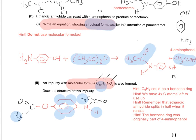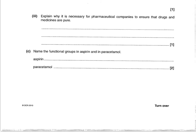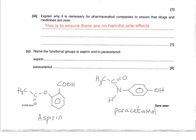The question asks why it's necessary for pharmaceutical companies to ensure that drugs and medicines are pure — worth one mark, relating to safety and patient safety: no harmful side effects. The next part asks you to name the functional groups present in aspirin and paracetamol. For aspirin you have an ester and a carboxylic acid; for paracetamol you have an amide and a phenol.